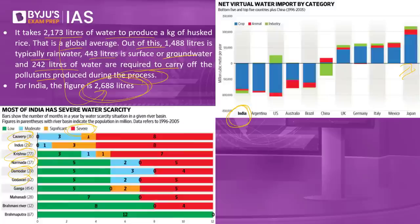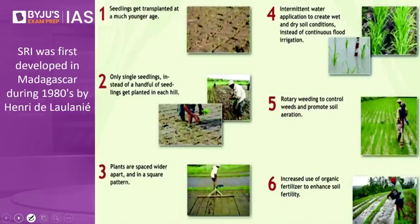The two major problems of rice cultivation are: first, it releases methane, a greenhouse gas leading to climate change; and second, it requires a lot of water, meaning we are not only exporting rice but virtually exporting water as well. To overcome these issues and the limitations of the traditional method, a new method called SRI — the System of Rice Intensification — was developed. SRI was first developed in Madagascar during the 1980s by Henri de Laulanié.